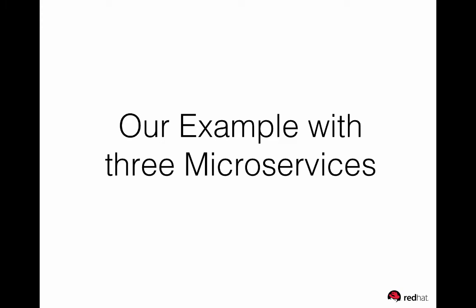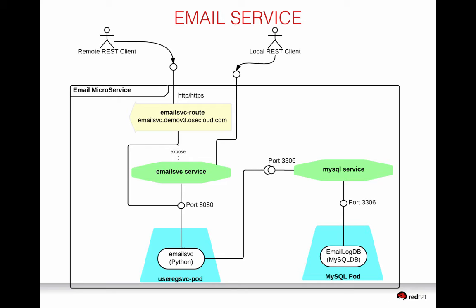Our example has three different microservices. The first one is an email service, written in Python, and it will be used by the actual application. This is a polyglot setup — each service is written in its own language. The email service runs in its own pod and has its own service. You can expose it by using a URL, or if the client is internal, use the local RESTful interface to talk to the email service directly.